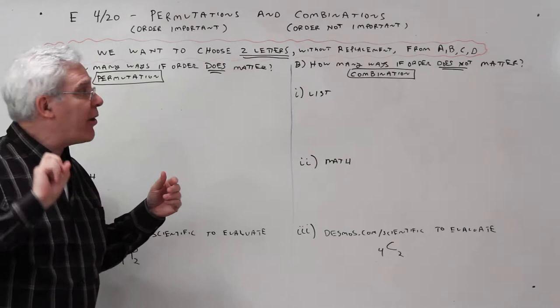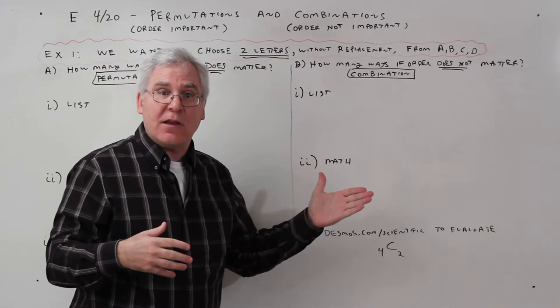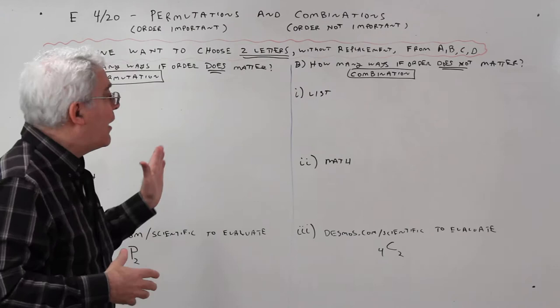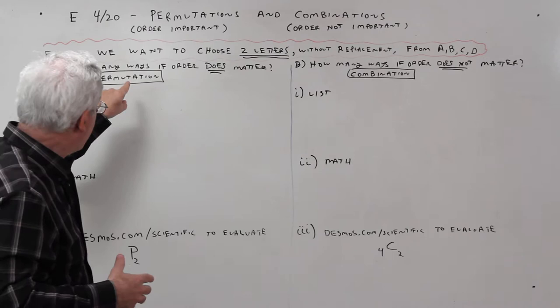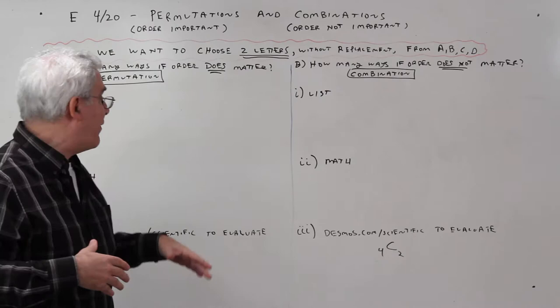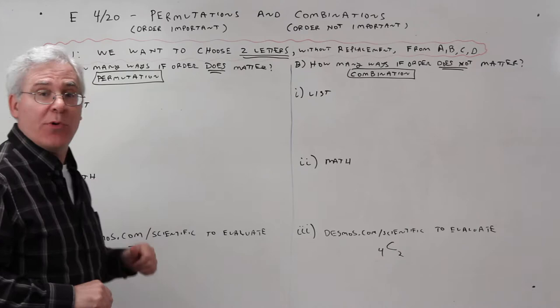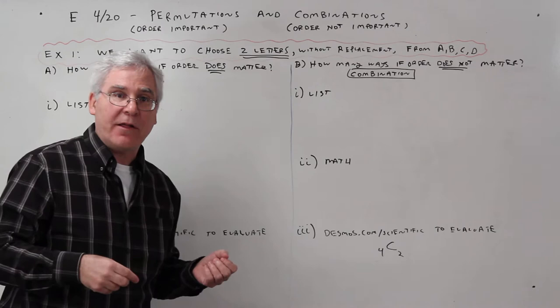Example one, we want to choose two letters without replacement from the letters A, B, C, and D. And on the left side, order will matter. And on the right side, order does not matter. If order matters, it's a permutation. If order does not matter, it's a combination. And I'll have you solve this problem three ways: making a list and counting, doing some math, and then pressing buttons on a calculator or using the Desmos calculator. Let's make a list.